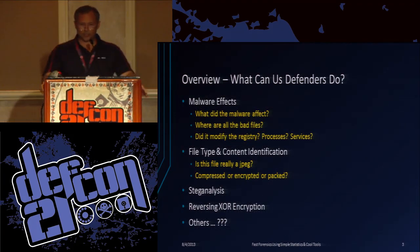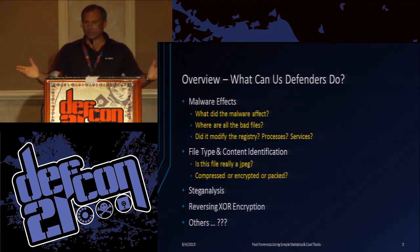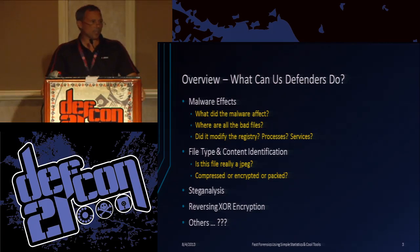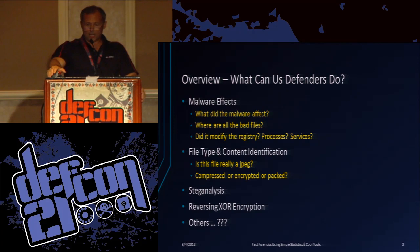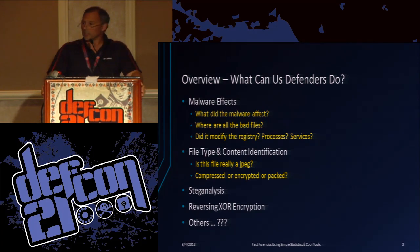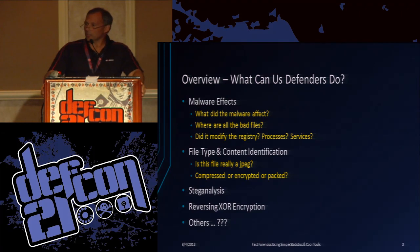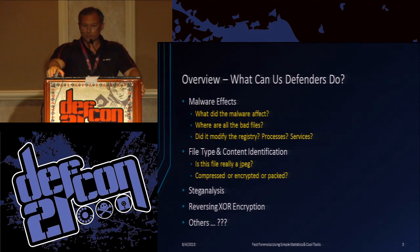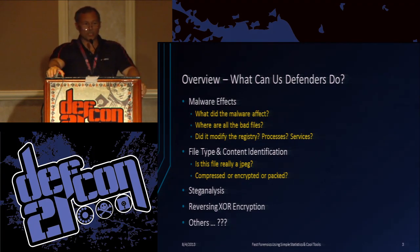So what can us defenders do? Sometimes malware has attacked your system — it does stuff, right? It drops files, changes registry keys, things like that. You want to know what happened. Another useful topic we'll talk about today is file content type identification. Just because a file has an extension doesn't mean that's what it is. We'll look a little deeper than just looking at the magic numbers, a little bit of steg analysis, a little bit of reversing XOR encryption. There are lots of uses for these various tools — some stego tools, analysis tools. They're all on the CD.